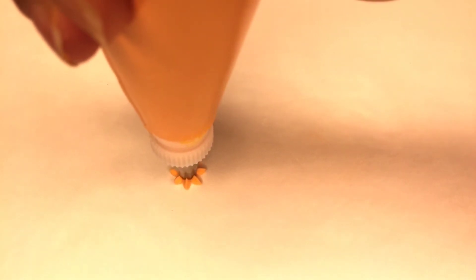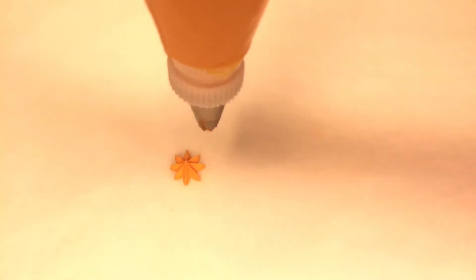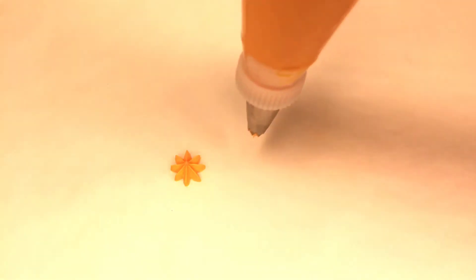Now let's take a look at this technique from overhead. Here we're going to repeat the same steps. We go down, we squeeze, stop completely, and lift straight up. And that is a star. And you can see it's a very simple technique.